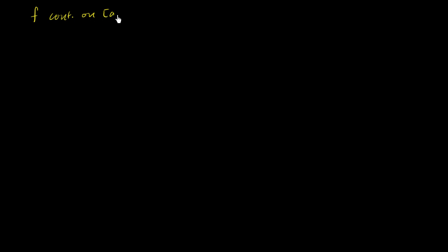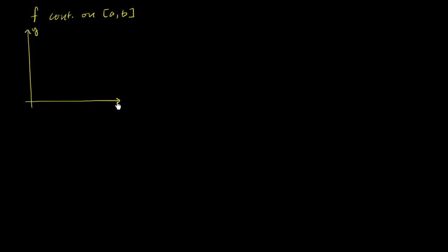Let's say that we've got some function f that is continuous on the interval a to b. So let's try to see if we can visualize that. This is my y-axis, and I'm going to make this my t-axis — we'll use x a little bit later. And then this right over here is the graph of y equals f of t. We're saying it's continuous on the interval from a to b, so this is t equals a and this is t equals b.